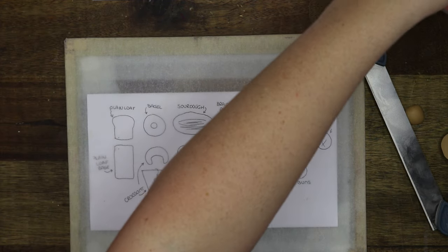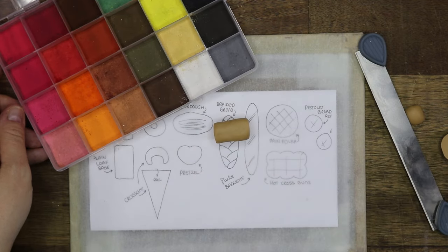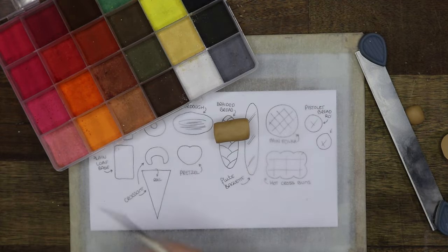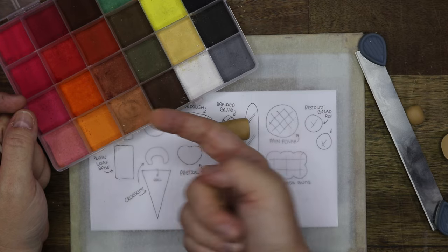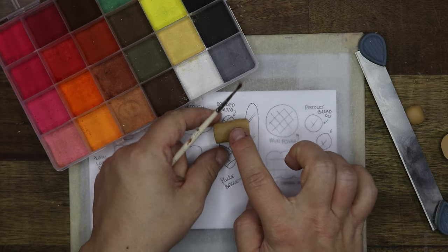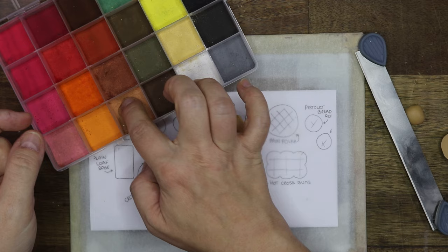Once I'm happy with the shape, it's time to apply color. I start by dipping my finger in the powder chalk pastels and apply it to the bread. This gets the largest area covered, and you can then go in with a brush for the darker shades.